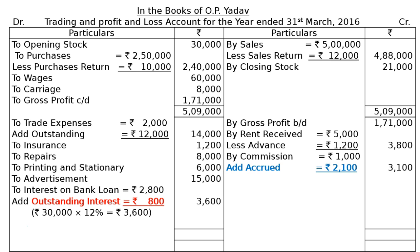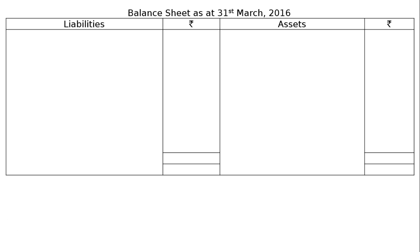The total of the credit side of the profit and loss account is Rs. 1,77,900. Deduct all expenses on the debit side of the profit and loss account, and you will get net profit carried down Rs. 1,30,100. Then come down to the balance sheet.